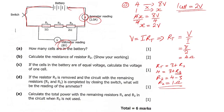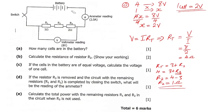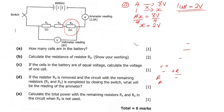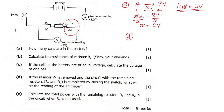Question D says: if resistor R3 is removed and the circuit with the remaining resistors R1 and R2 is completed by closing the switch, what will be the reading of the ammeter? So if R3 is removed, we remain with only R1 and R2.